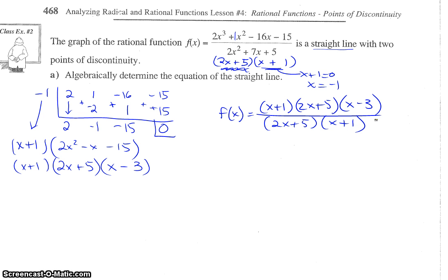Okay, so read the question again. What were we doing? It was so long ago. So, algebraically, determine the equation of the straight line. Okay, so knowing that, let's first do our restrictions. 2x plus 5 can't equal 0, so x can't equal, subtract the 5, divide by 2.